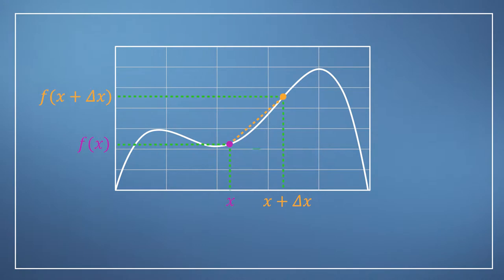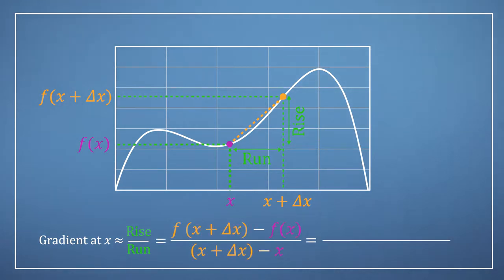So we can now build an expression for the approximate gradient at our point x, based on the rise over the run gradient between point x and any second point, remembering that the run will be our distance delta x, and our rise is just the difference in heights of the two points.